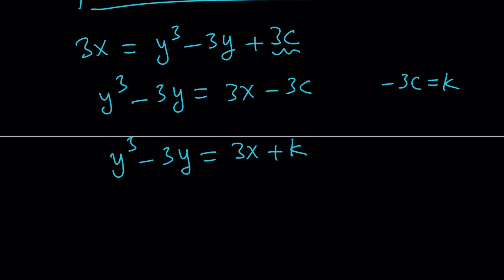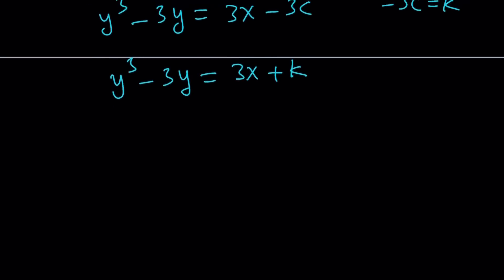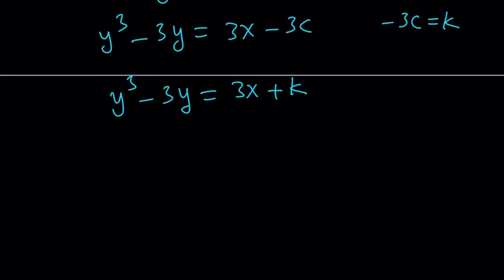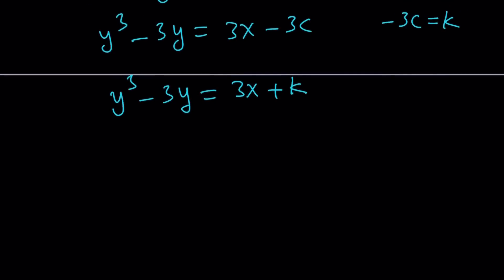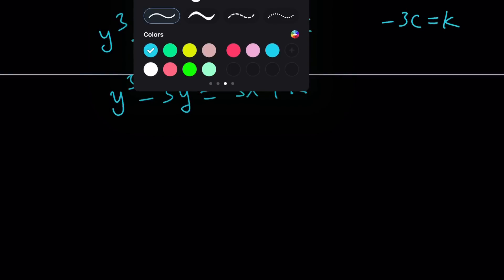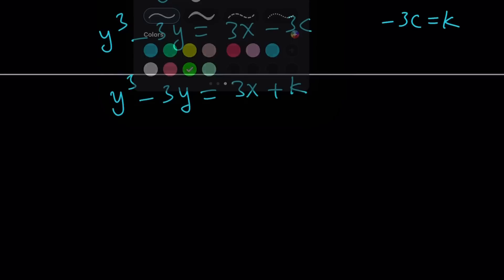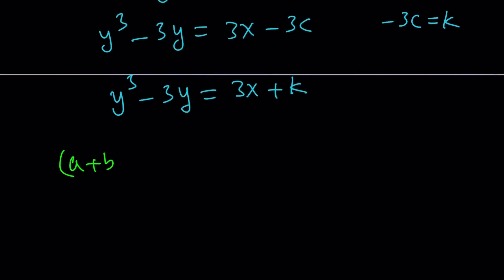And look at the left-hand side. Doesn't that look familiar? We've done quite a few problems on the cubic formula, solving cubic equations. But there's a cubic formula, which depends on an identity. So, let's go ahead and write down that identity. It is a plus b cubed minus 3ab times a plus b equals a cubed plus b cubed.